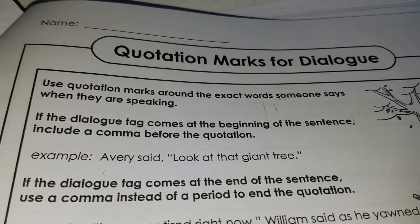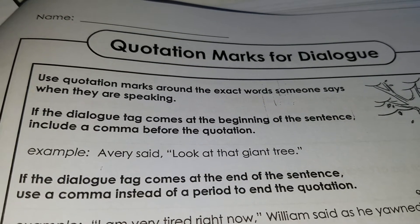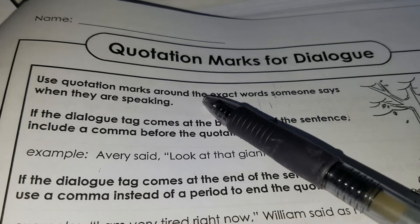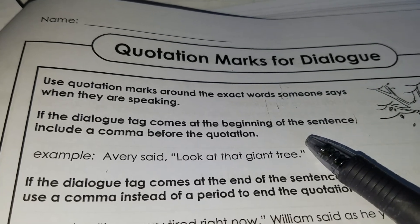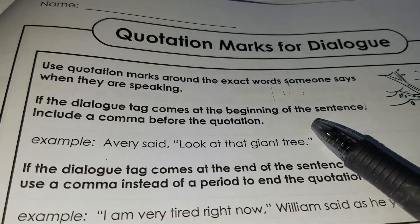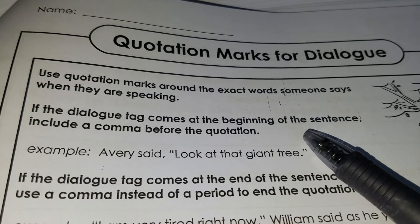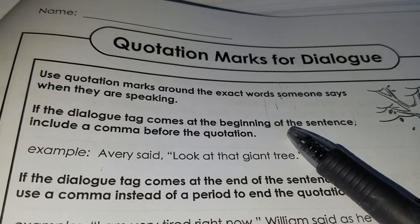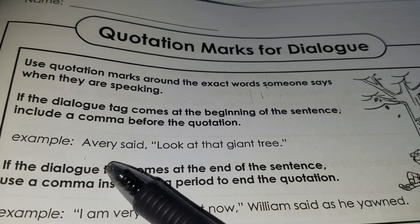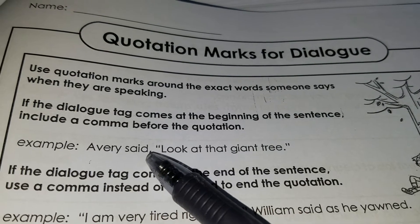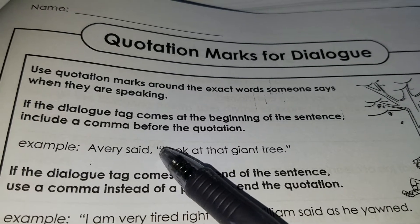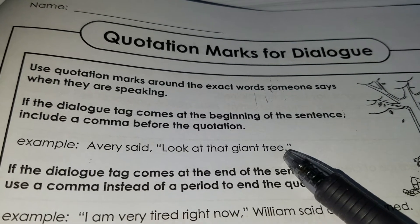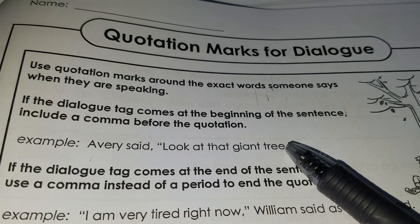Use quotation marks around the exact words someone says when they are speaking. If the dialogue tag, or identifier as I call it, comes at the beginning of the sentence, include a comma before the quotation. Example: Avery said, "Look at that giant tree."